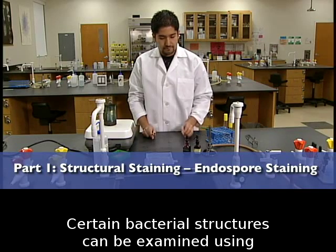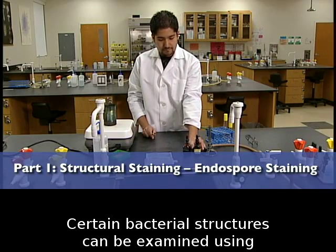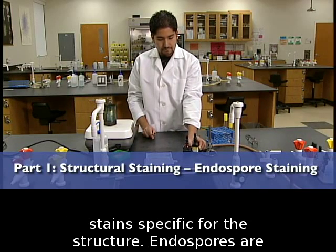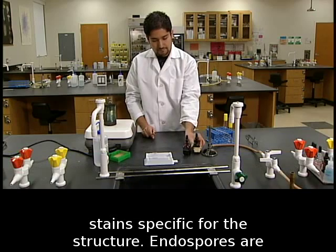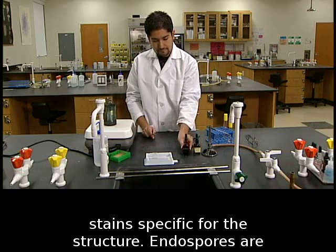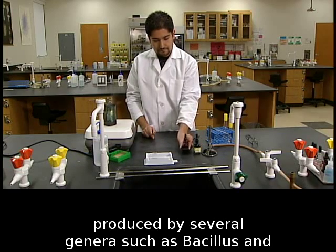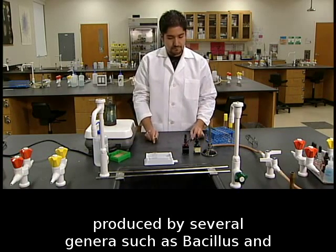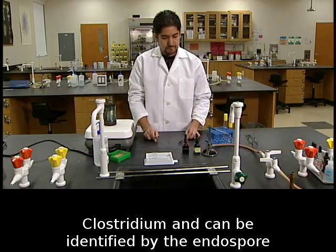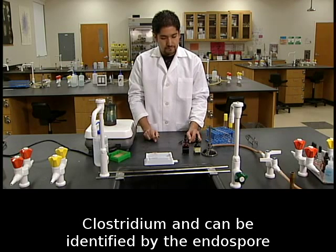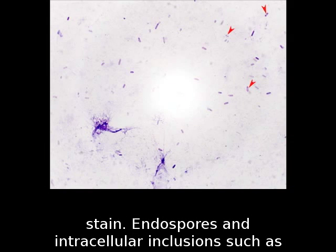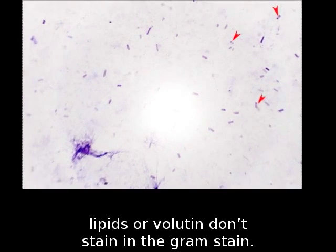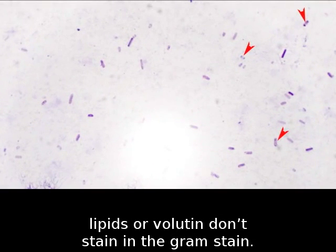Certain bacterial structures can be examined using stains specific for the structure. Endospores are produced by several genera, such as Bacillus and Clostridium, and can be identified by the endospore stain. Endospores and intracellular inclusions, such as lipids or volutin, don't stain in the Gram stain.